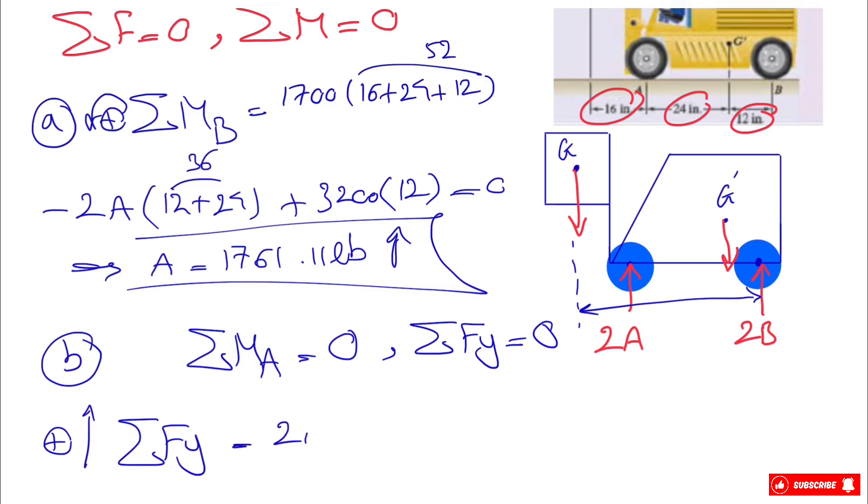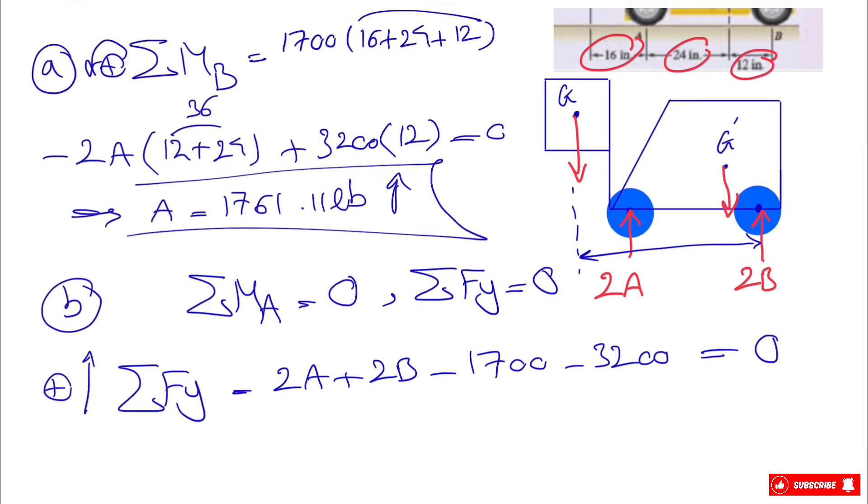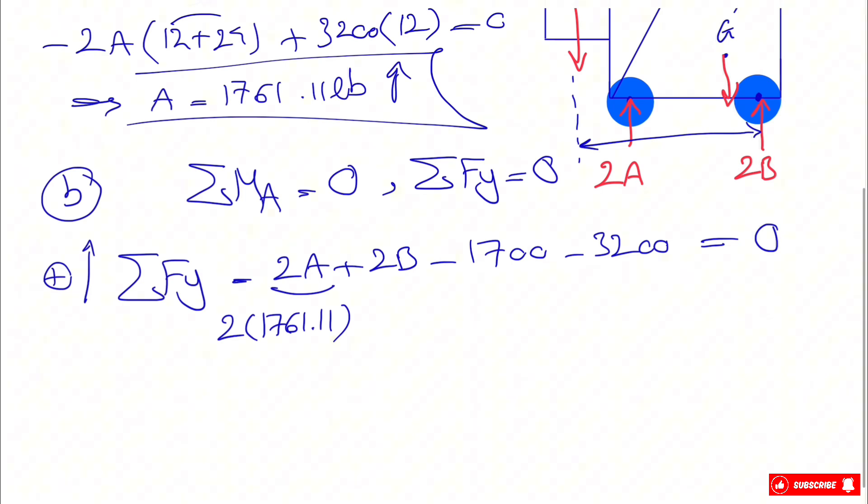And if you do that, we have 2A plus 2B minus the two weights that we have, including the weight of the crate and the weight of the lift truck, that would be equal to zero. We already found A from the previous part, so it will be 2 times 1761.11, and the rest of this will be the same.